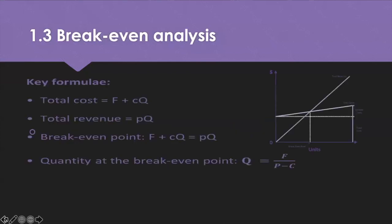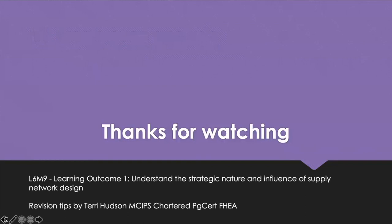Break-even analysis is a capacity planning tool used to identify the amount of sales required in order to break even — the point at which total revenue equals total cost — and how much of a product or service an organization needs to sell in a certain period to cover the costs of doing business. The key formula looks at total cost, total revenue and the break-even point. The formula for finding quantity at the break-even point has F as fixed cost, C as variable cost, Q as quantities, and P as the revenue from selling a product or unit. That is the end of Learning Outcome 1.